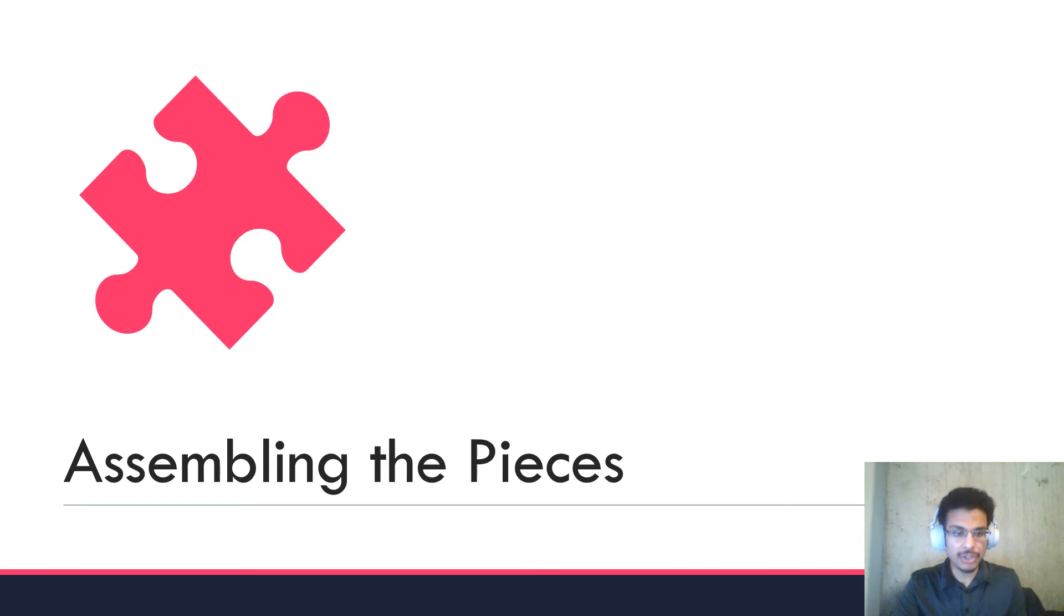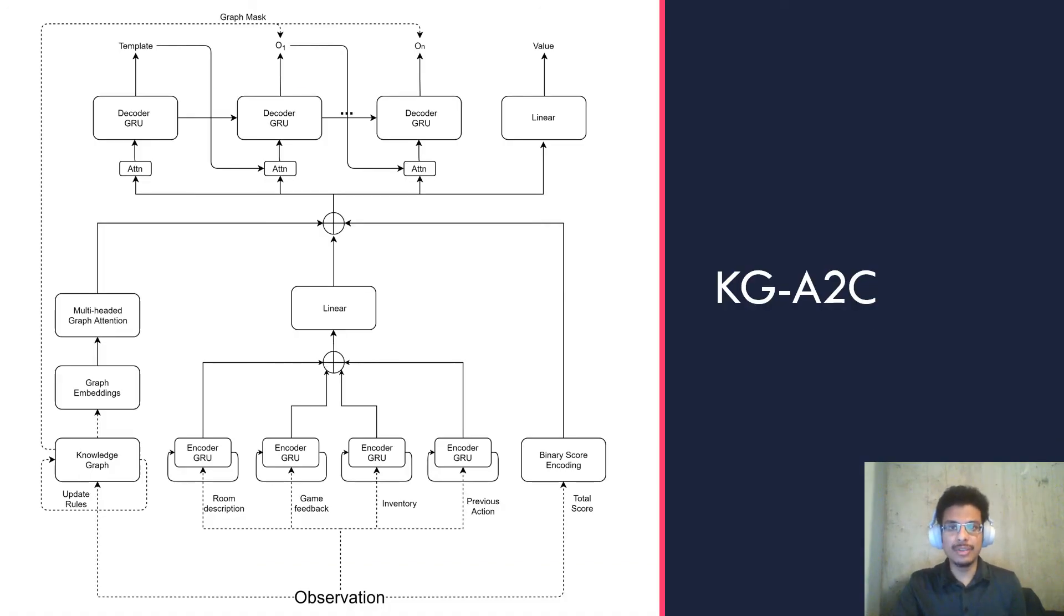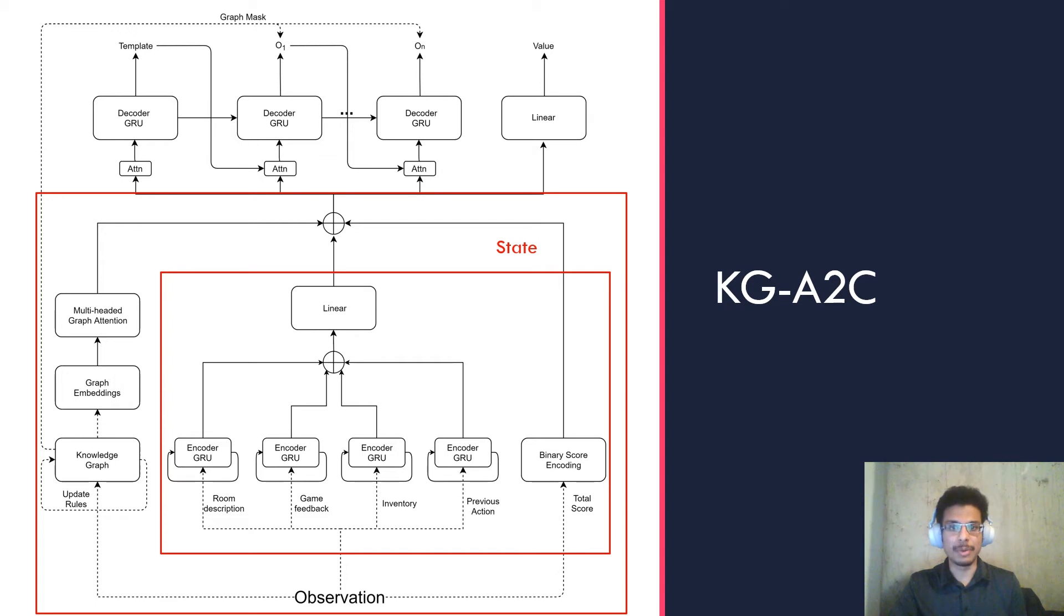Now putting all these pieces together, we introduce the KGA2C, which integrates the knowledge graph with A2C, a well-studied RL algorithm. It augments A2C in two ways. The first is the state representation—it gives the agent a better input state representation. This includes GRU encodings of the raw textual descriptions followed by the score. Then the knowledge graph is embedded using a graph attention network or GAT network to help the agent focus on which parts of the graph it wants to see.